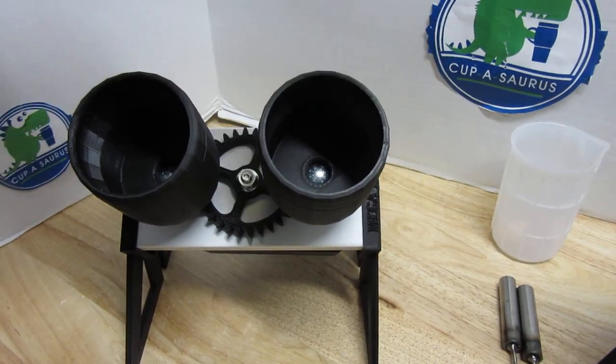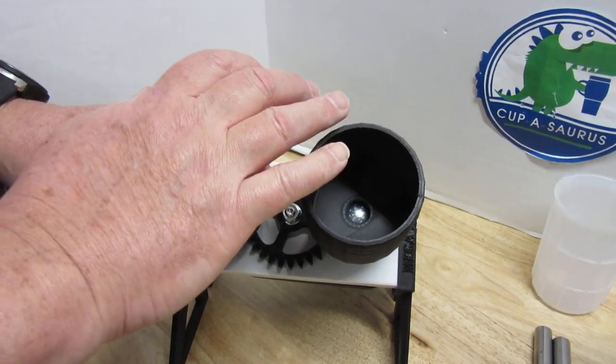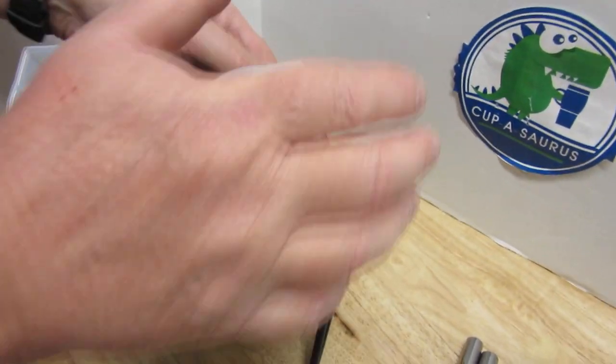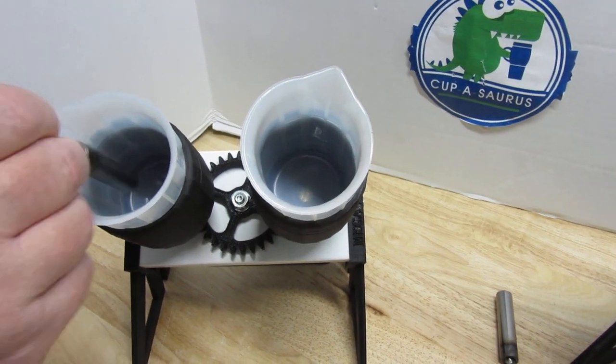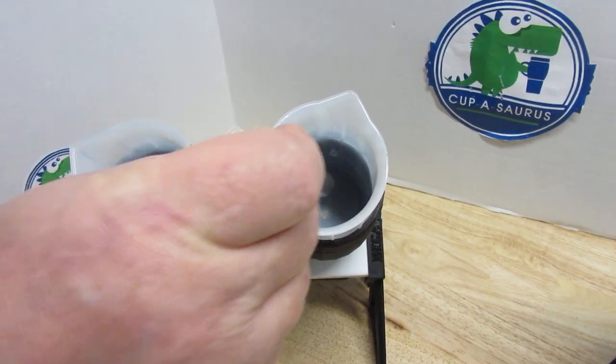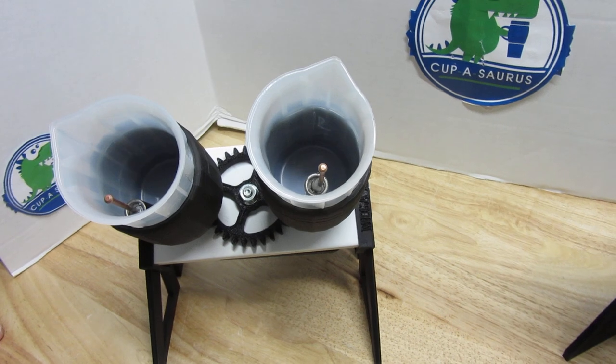The silicone cups fit nicely in. You can still use disposables if you want to, but the idea for this mixer is for you to be able to use the same silicone cup over and over again.